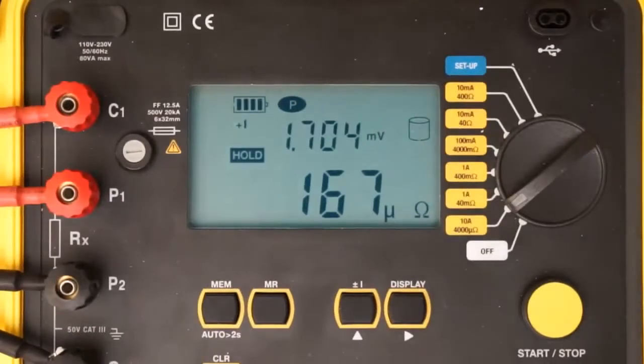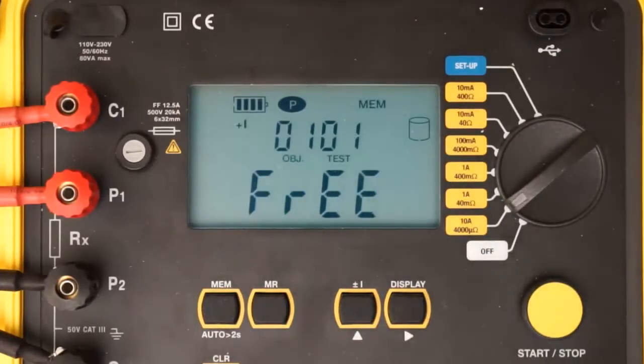To save the stopped test in the instrument's memory, press the memory button. This displays the default object number and test number under which this test will be saved. An object can contain multiple tests, similar to a folder containing multiple files. You can accept the displayed object and test numbers, or change them by pressing the up button, and then using the up and right buttons to make changes.